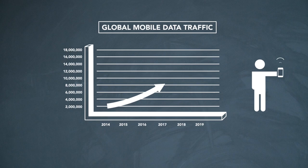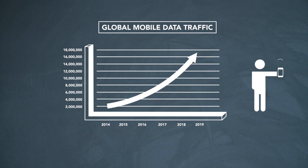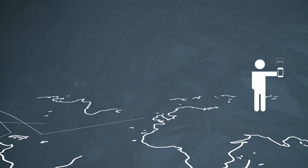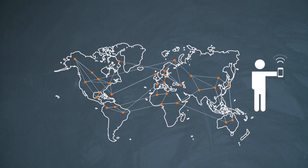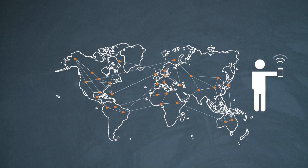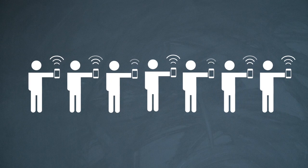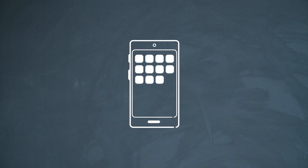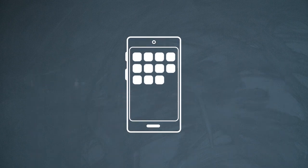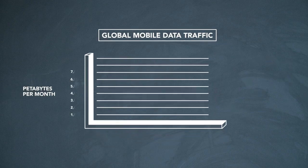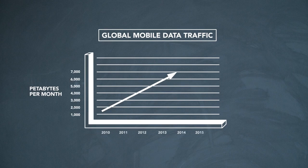We know that small cells are needed because the challenge is the number of users being added to networks on a global basis is really quite astounding. These users all want to be mobile, they all want to have access to their smart devices, which in turn require more and more data from the network. So not only do we have more users, more instances of smartphones in the network, but those smartphone applications also require more data, usually video, sometimes streaming music, interactive applications that require more data across these more users on a global basis.